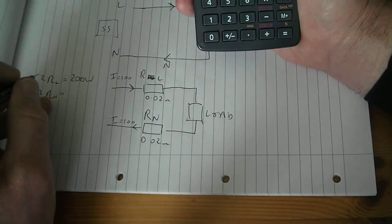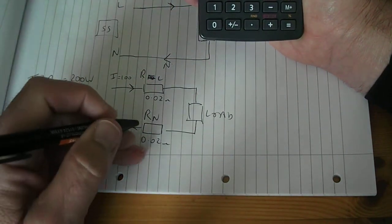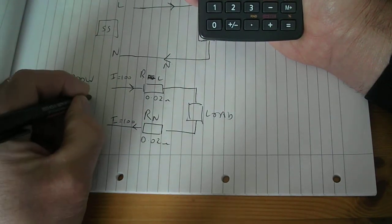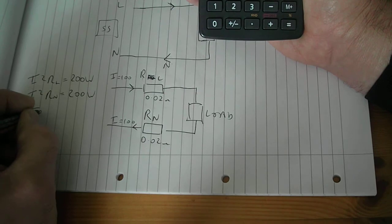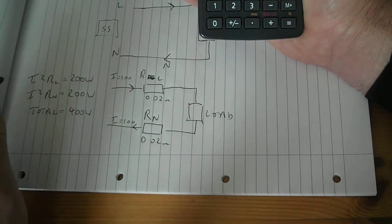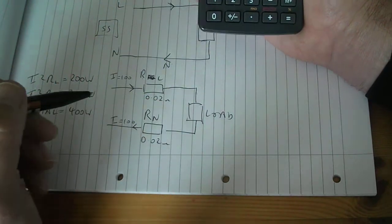And in the neutral that's going to be the same because it's the same resistance. That's going to be 200 watts as well. So the total equals 400 watts.